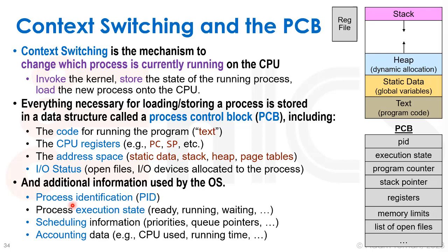The PCB also includes I/O status such as open files and allocated I/O devices, plus additional metadata used by the OS: the process ID (PID), execution state (ready, running, waiting), scheduling information like priorities and queue pointers, and accounting data such as CPU usage and running time for aging. The PCB contains everything from the memory map and registers plus all that metadata — it's quite a large data structure that must be saved and loaded every time we context switch.